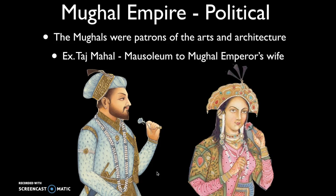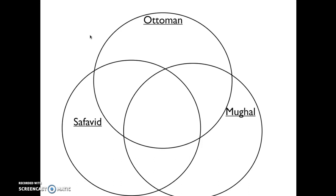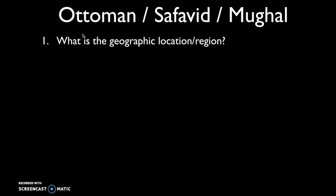Building magnificent grand structures like the Taj Mahal — built out of white marble with immaculate construction — was designed to legitimize the ruler's power. After watching this video, you should identify similarities and differences between the Ottoman, Safavid, and Mughal empires using a Venn diagram, addressing questions about geographic location, which religion holds power, and the religion of the majority of people within each region.